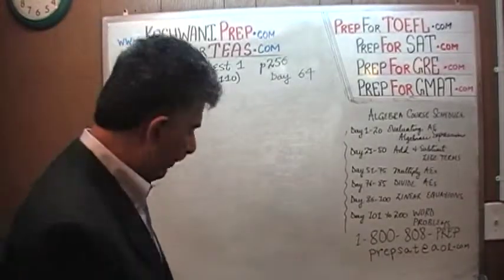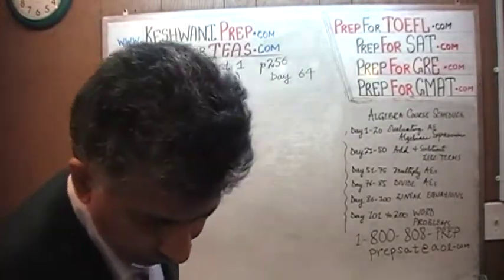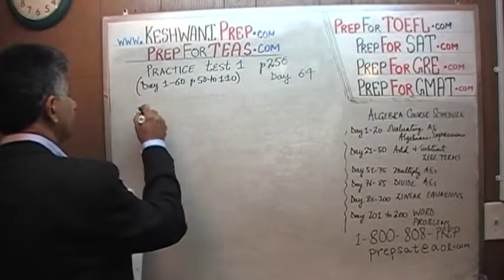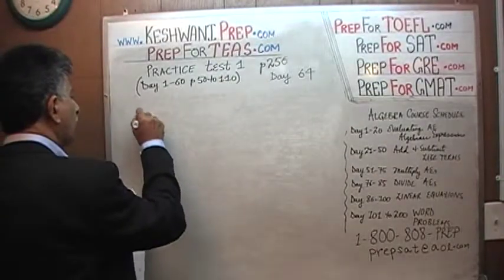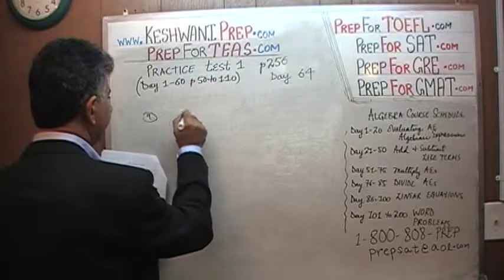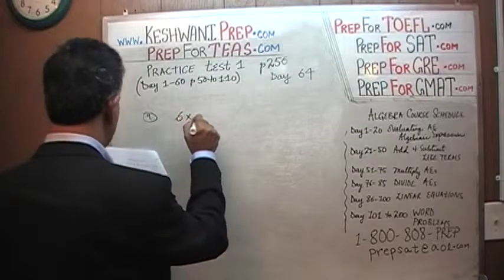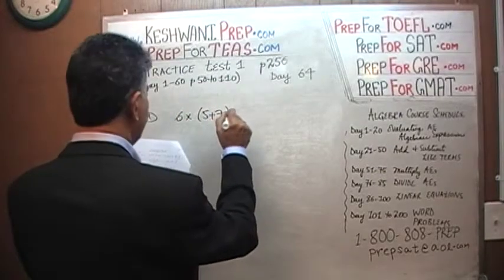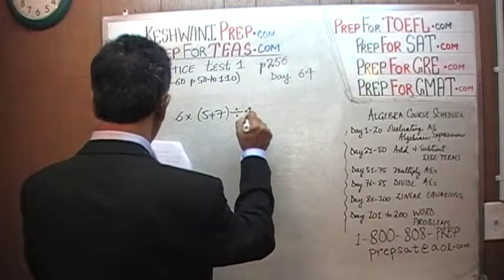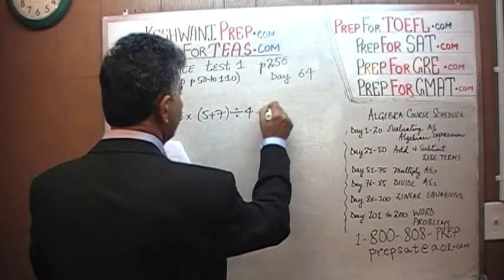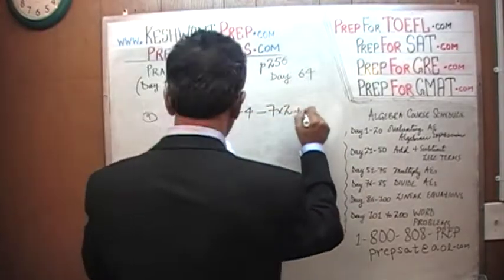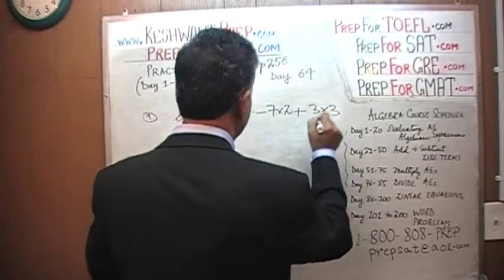Problem number 9 is: 6 times (5 plus 7) divided by 4, minus 7 times 2, plus 3 times 3.